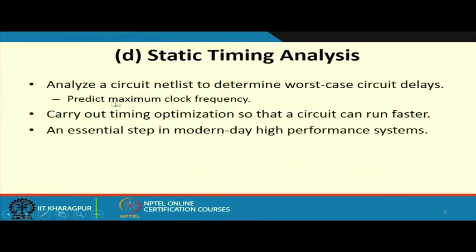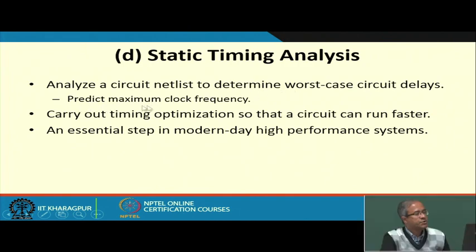Rising time and falling time of the signals, the maximum or the slowest rising and slowest falling times we have to take care in order to determine the slack values. Using this you can estimate the worst case delays and hence you can predict the maximum frequency with which you can feed the clock signal. Not only that you can suggest some circuit modifications so that the circuit can run faster. This is an essential step in modern day systems.